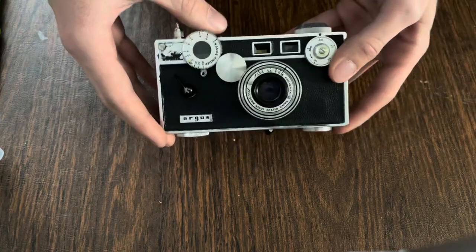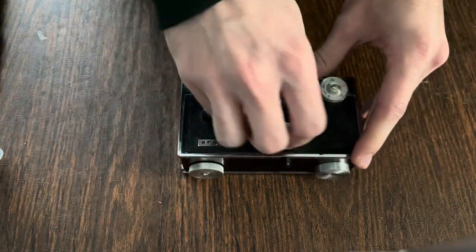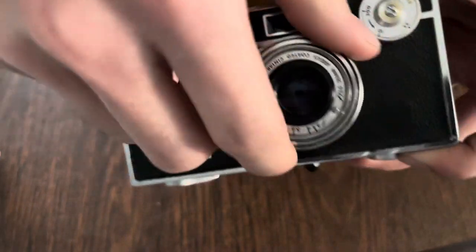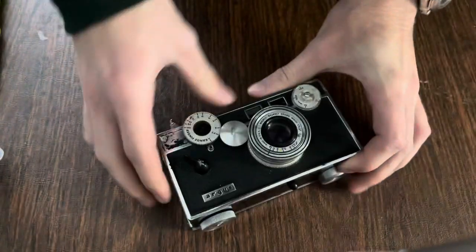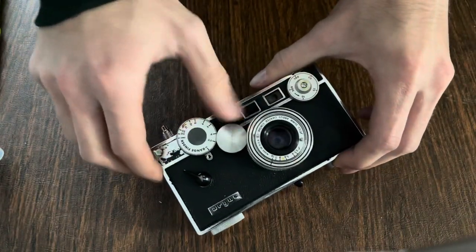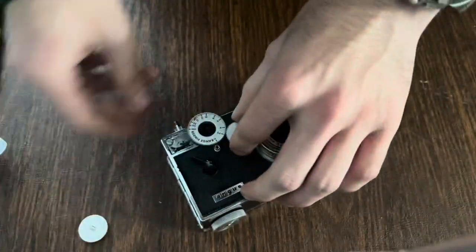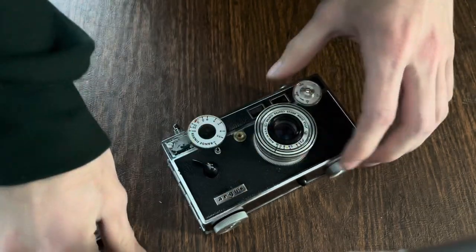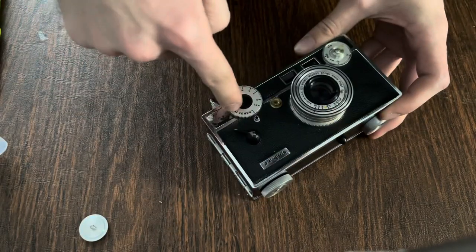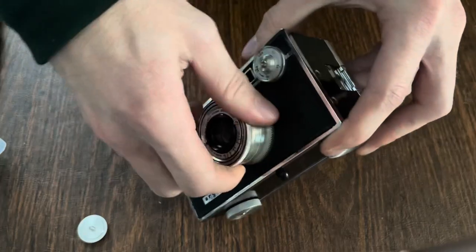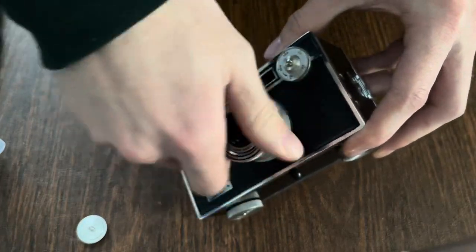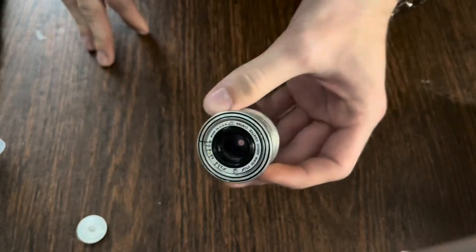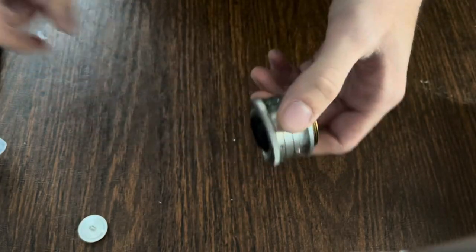To remove the lens, first make sure it's set to the closest setting. Then remove the thumb screw here, remove the idler gear, and make sure not to touch the rangefinder dial. Then unscrew the lens, set the camera aside, and you have the lens detached from the camera.